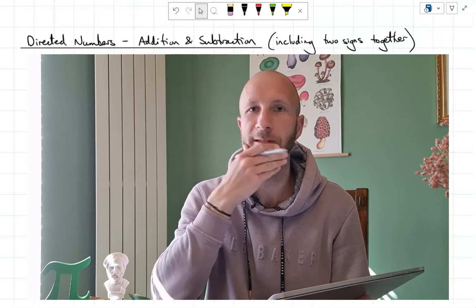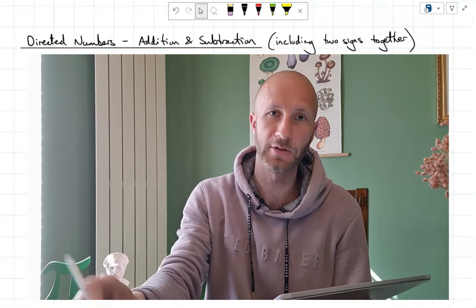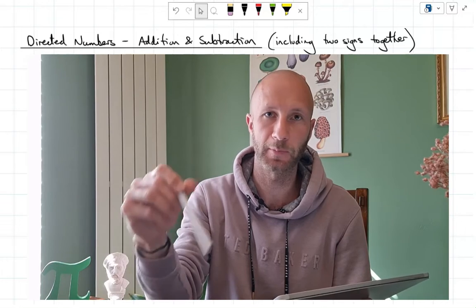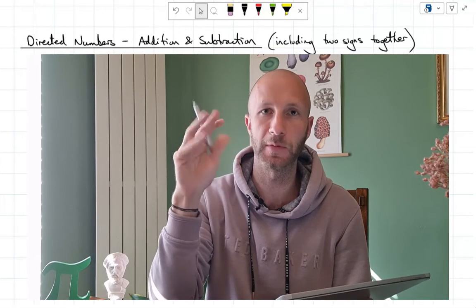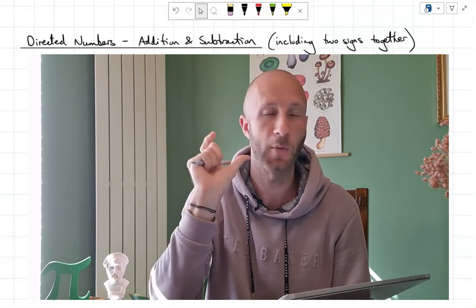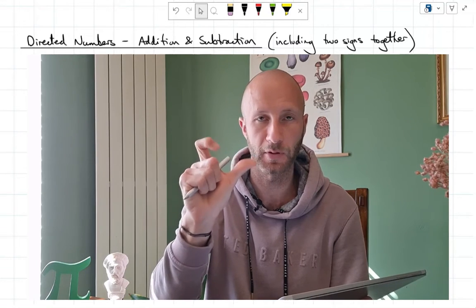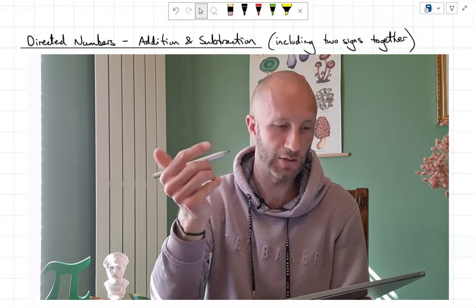Hello, welcome back to Mr Miles Maths. Nice to see you again. Today we're going to be looking at directed numbers, which is just a fancy way of saying positive and negative numbers, looking at in particular adding and subtracting them. And what happens when you get two signs together, which you'll look in the second part of the video. Enjoy.